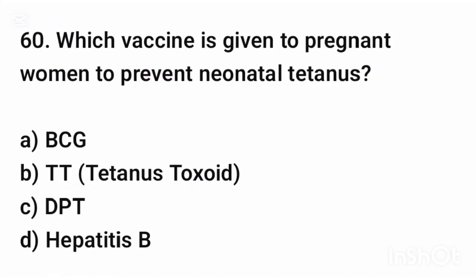Question number sixty. Which vaccine is given to pregnant women to prevent neonatal tetanus? The correct answer is option B: TT (Tetanus Toxoid).